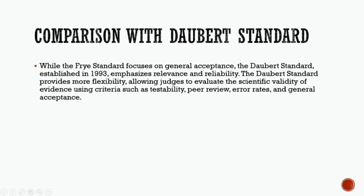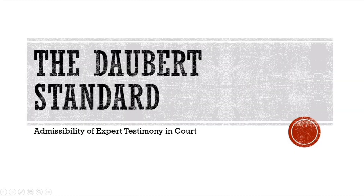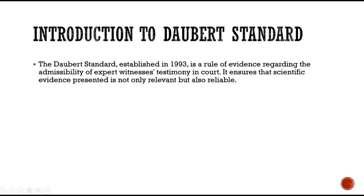Let's start with the Daubert standard. Introduction: the Daubert standard was established in the year 1993, and it is used to determine whether scientific evidence should be reliable as well as relevant. It is used to determine whether scientific evidence is relevant or reliable and should be produced in court.